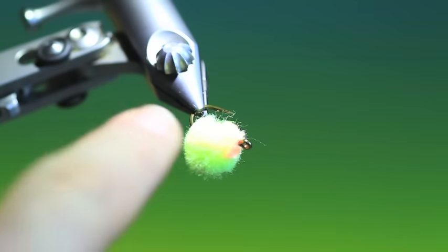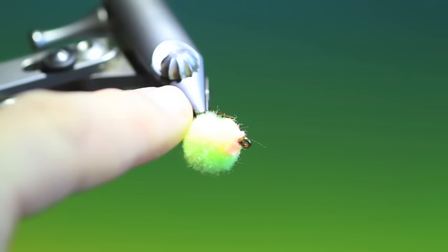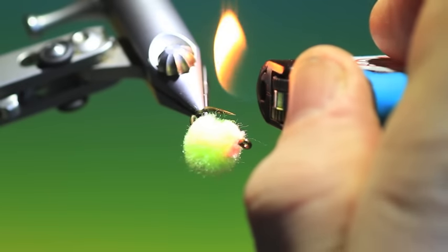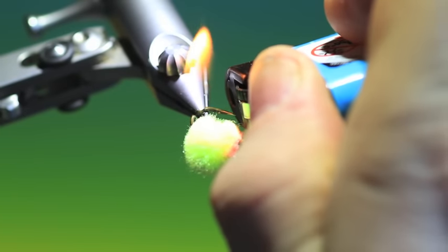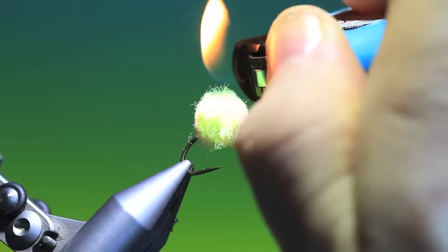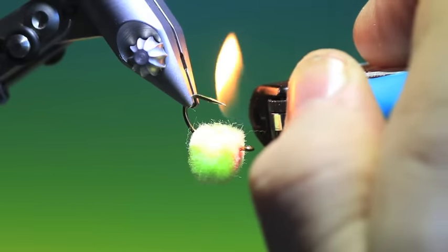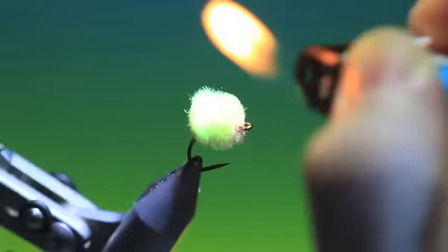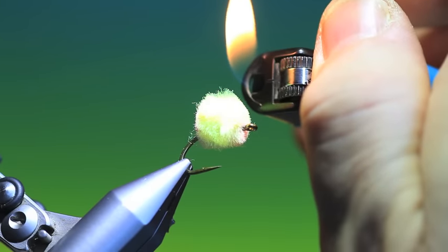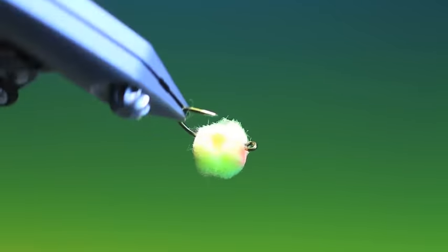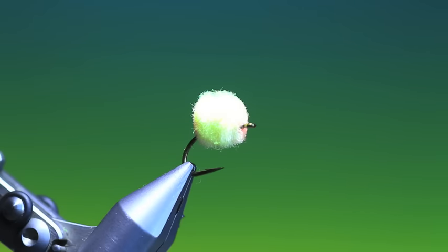Now that one's pretty good, but you can see maybe I've got a little bit of an uneven area there. Instead of cutting, if you start cutting this it takes time. So instead of doing that, you can remove just by being careful all the straggly bits with a lighter. Just like that. That's the finished Glowbug egg.